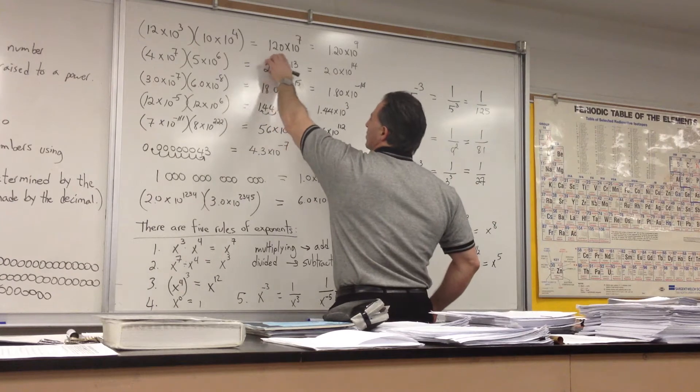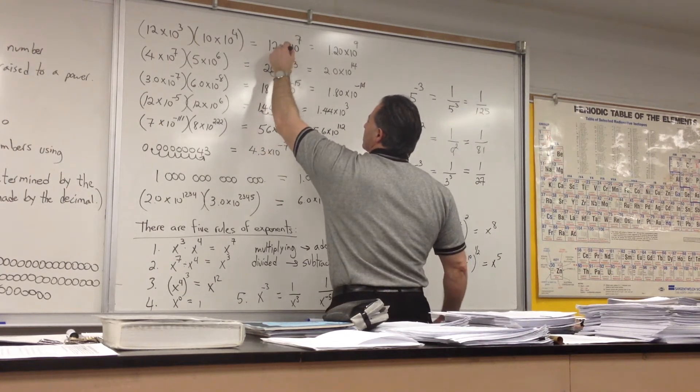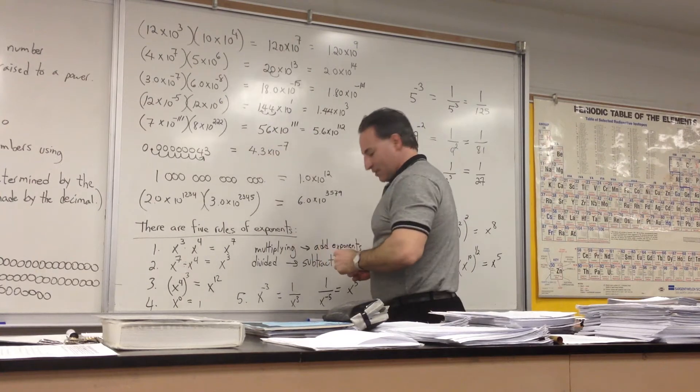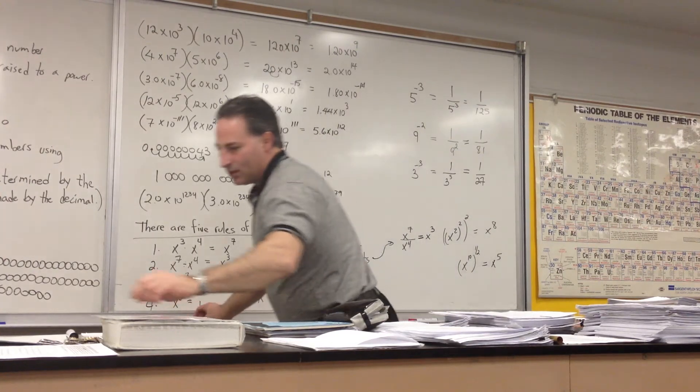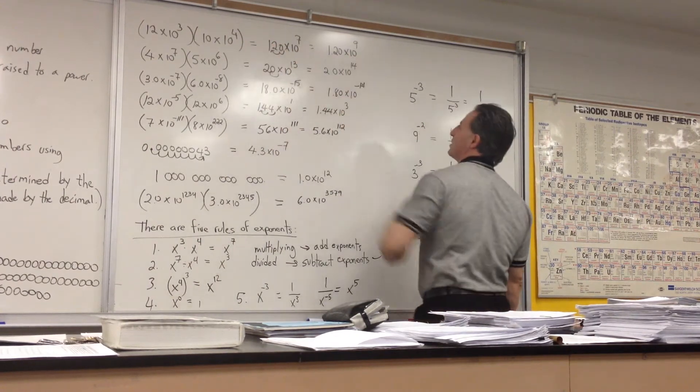Now, we don't leave it as 120 times 10 to the 7. The decimal place is here, so if we want to write it in proper scientific notation, we would skip the decimal over two places, and it would give us 1.2 times 10 to the 9.